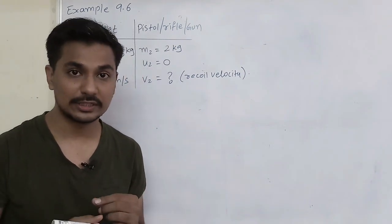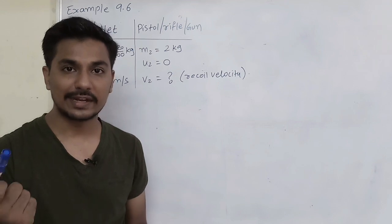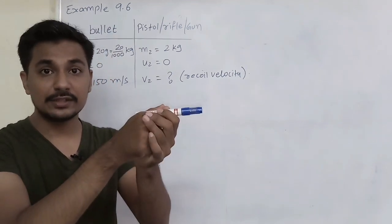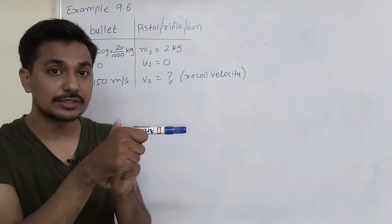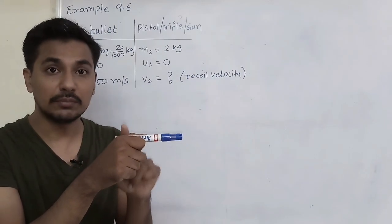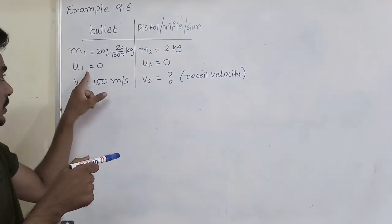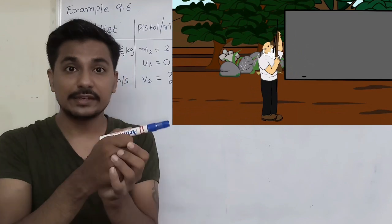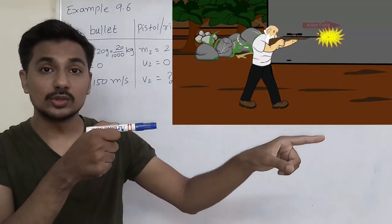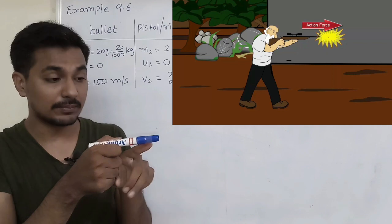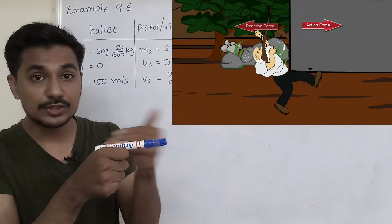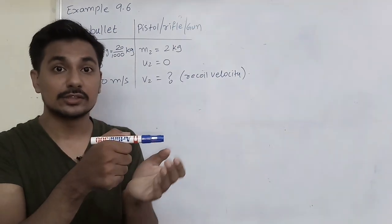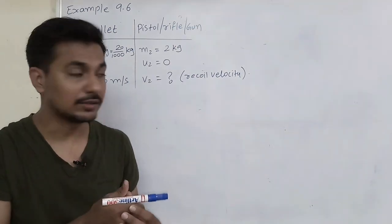Now, what is recoil velocity? See, initially you are holding a rifle or a gun in your hand. Now when you fire it, initially both are at rest — that gun and the bullet. So here both the initial velocities are zero. Now when you fire it, the bullet will move with a very high speed. So when the bullet moves, it pushes the gun in the backward direction — so the gun moves backward. That is called the recoil velocity of the gun.